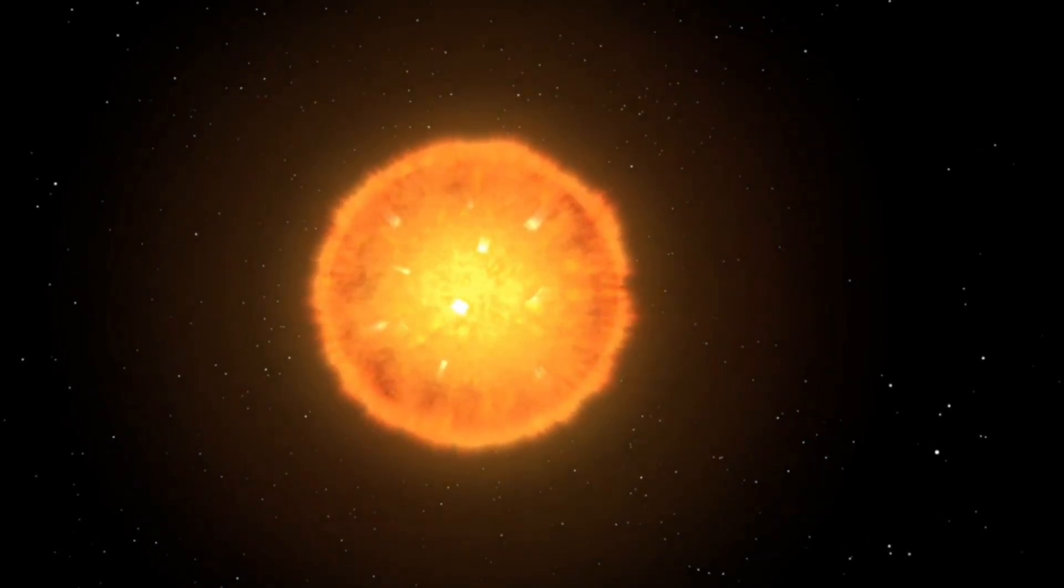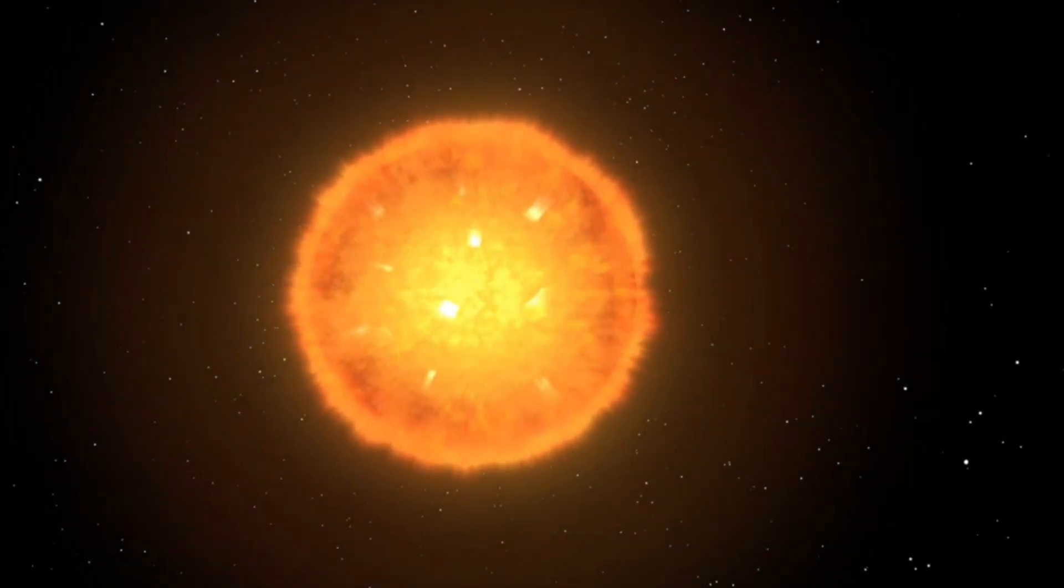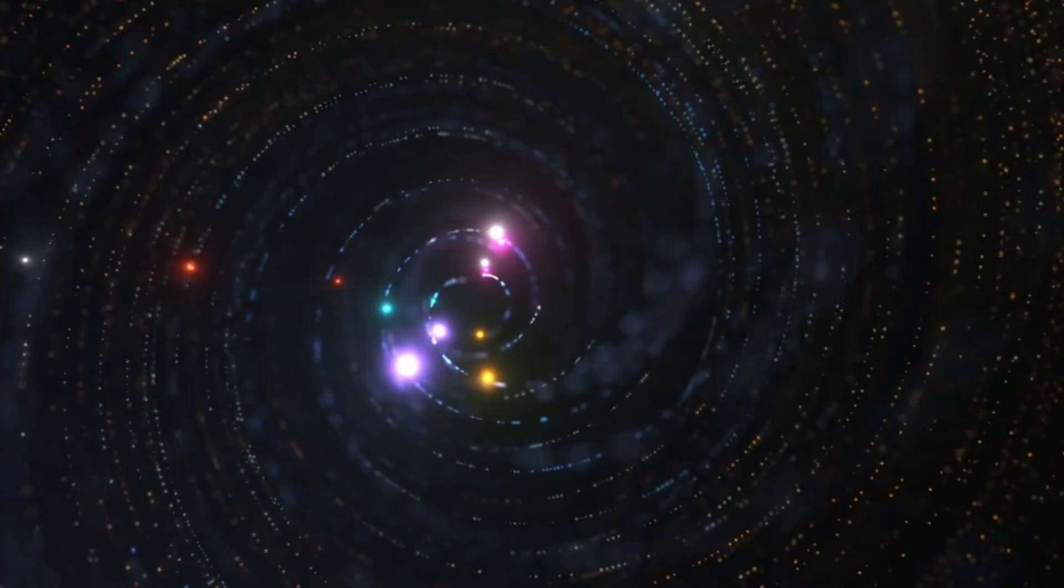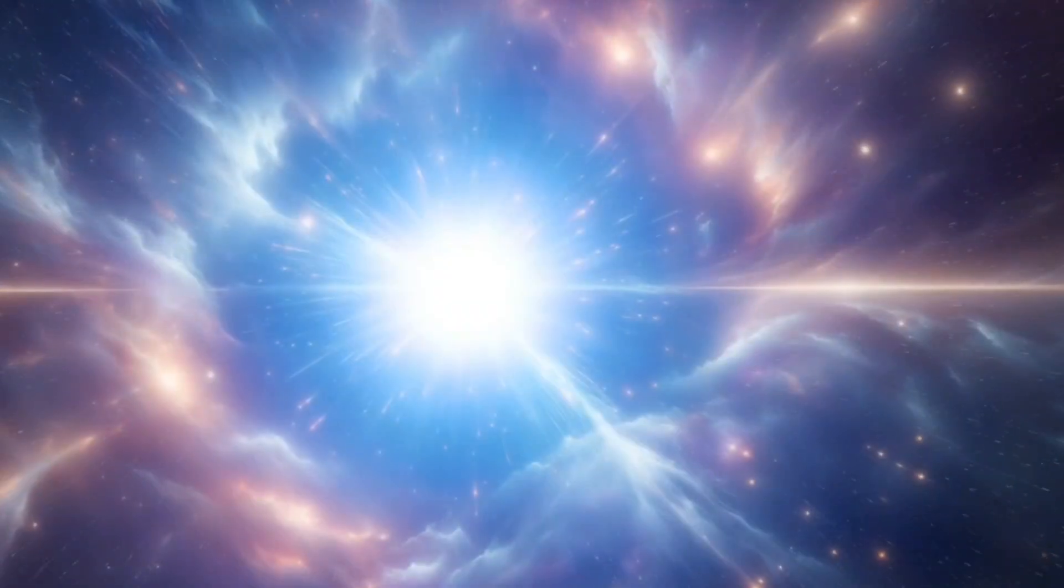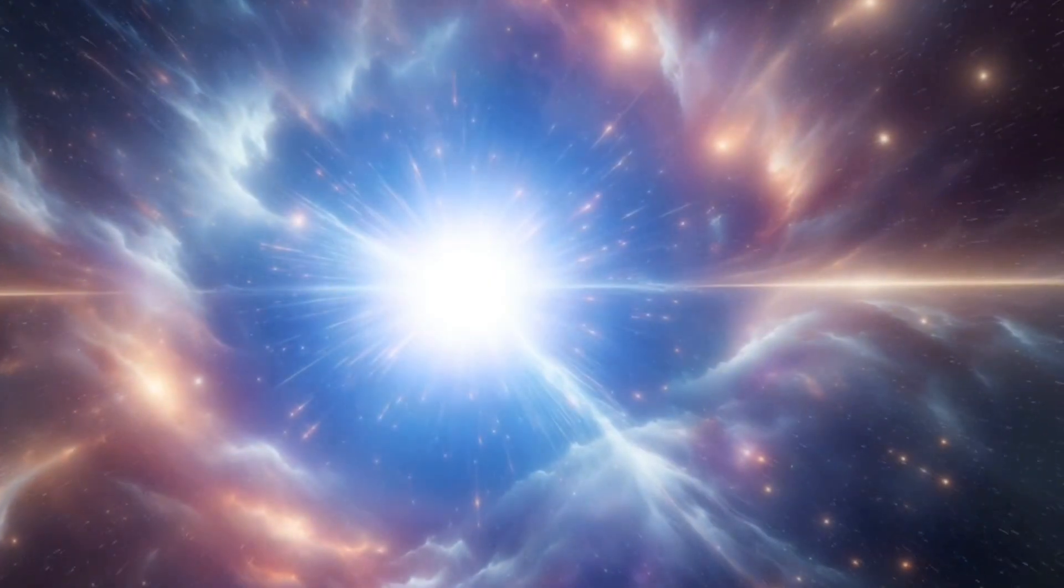Others theorized that Proxima B may be shielded, perhaps electromagnetically cloaked or encased within a localized field that dampens emissions. But why? To protect it from its violent star, or to hide it from us?